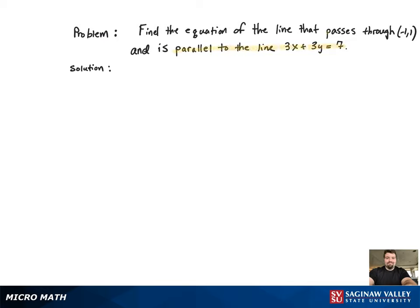We're going to start by highlighting the important pieces of information in our problem. We're going to start by looking at the fact that it's parallel to the line 3x plus 3y equals 7. Since it's parallel, that means that our line has the same slope as that line.